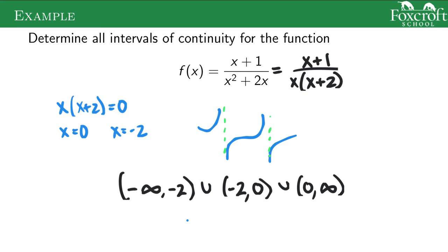And notice we don't have any of the square brackets for a closed interval, because these endpoints don't actually work. There's no function value at negative 2 and no function value at 0, so they can't be continuous at those endpoints. So we just have to use these open intervals with the parentheses.